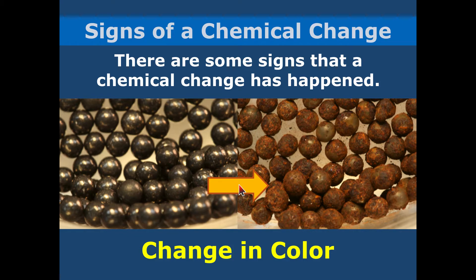The 'P' stands for precipitate — we've already shown a picture of that. A great example is if you take two clear liquids, mix them together, and a solid forms. That would be evidence of chemical change.